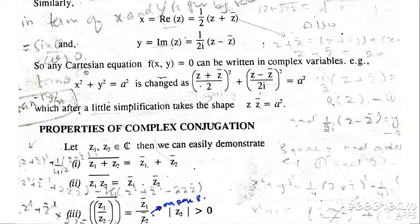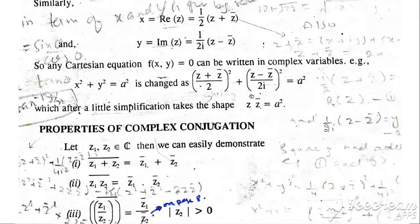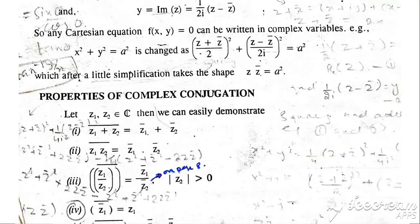A useful application: any Cartesian equation f(x, y) = 0 can be written in complex variables by replacing x with (z + z̄)/2 and y with (z − z̄)/(2i). For example, the circle x² + y² = a² becomes z · z̄ = a² after simplification. This means any Cartesian equation can be converted into a complex equation.